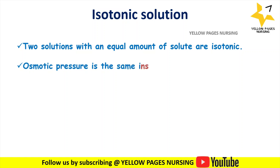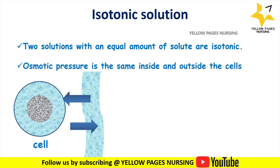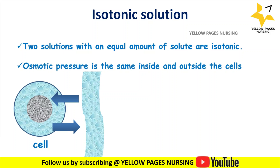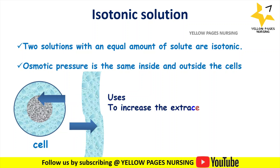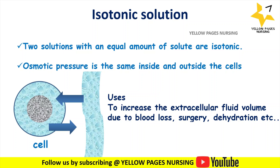Two solutions with an equal amount of solute are isotonic — osmotic pressure is the same inside and outside the cells, so they neither shrink nor swell with fluid movement. Isotonic solutions are mainly used to increase extracellular fluid volume because of blood loss, surgery, dehydration, or fluid loss that has been lost extracellularly.